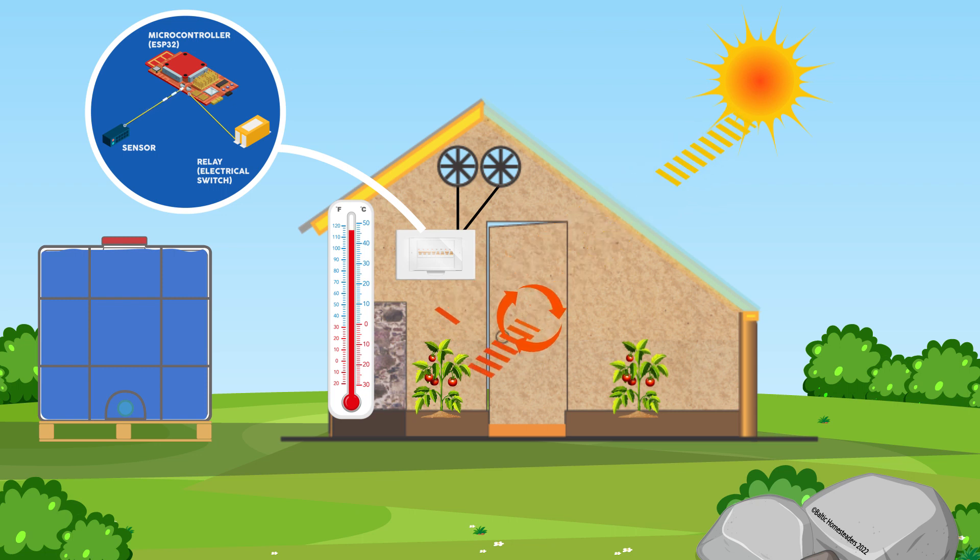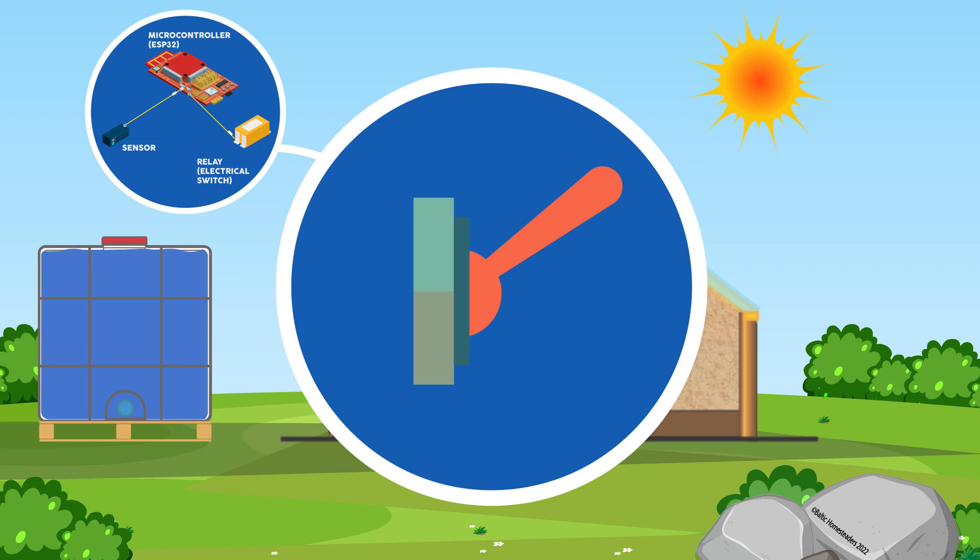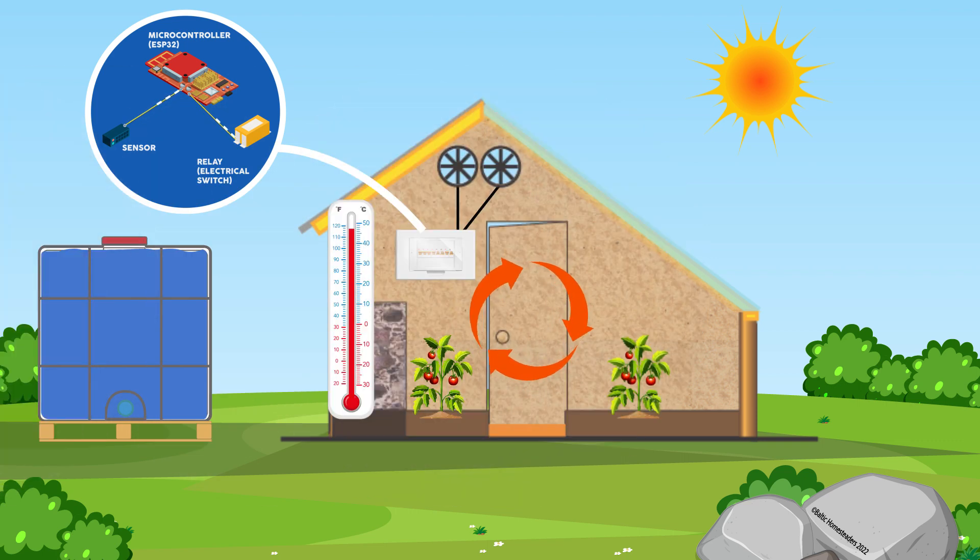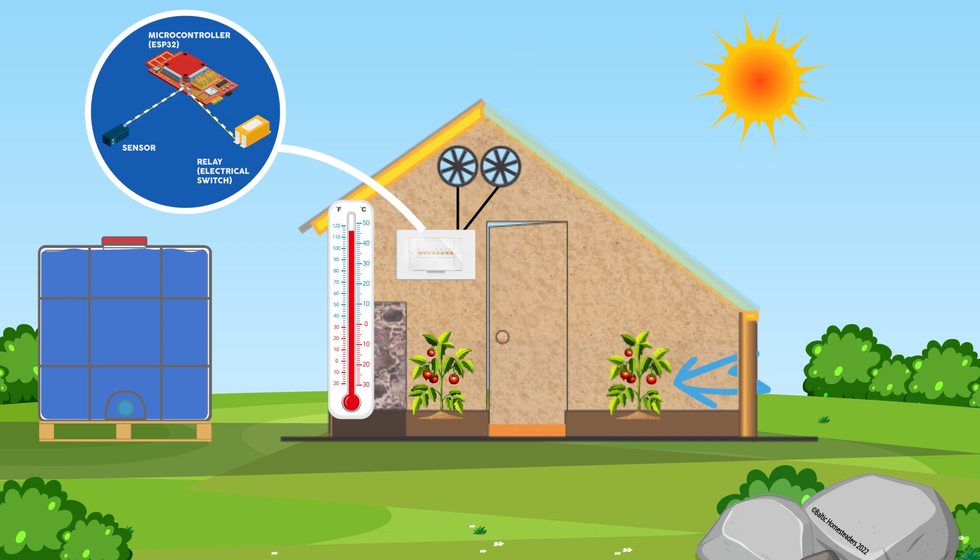The microcontroller can then use this data to control a relay, which is basically an electrical switch that can turn electrical devices on and off. For example, if the temperature inside the greenhouse gets too high, the microcontroller can use the relay to turn on the ventilation fans, helping to cool the greenhouse down.